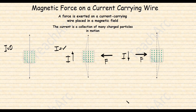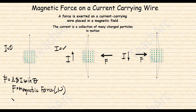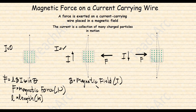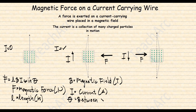Perhaps the easiest to identify is the magnitude of the magnetic force. We use the formula F equals L times B times I times sine theta, where F is the magnetic force in newtons, L is the length measured in meters, B is the magnetic field measured in tesla, I is the current measured in amperes, and the angle is between the magnetic field and the current. We will get the maximum value if the current and the magnetic field are perpendicular to each other.